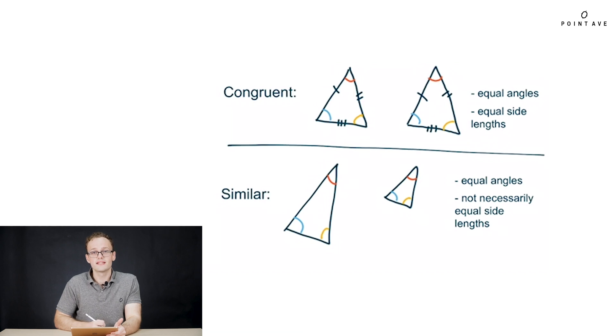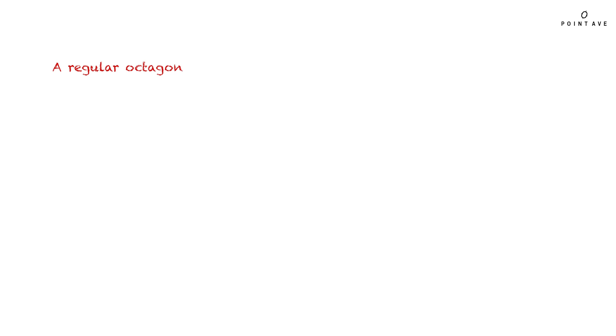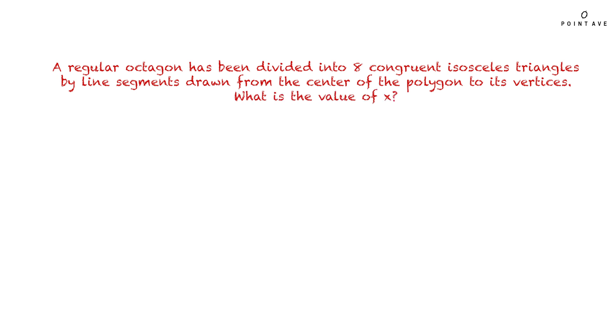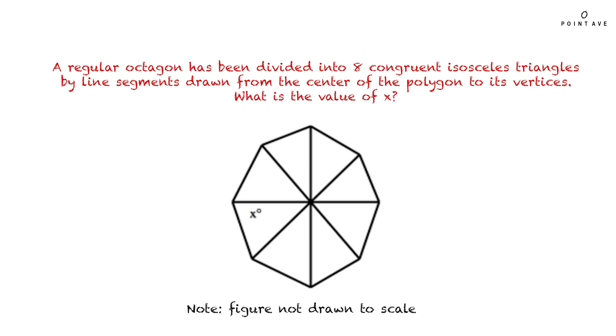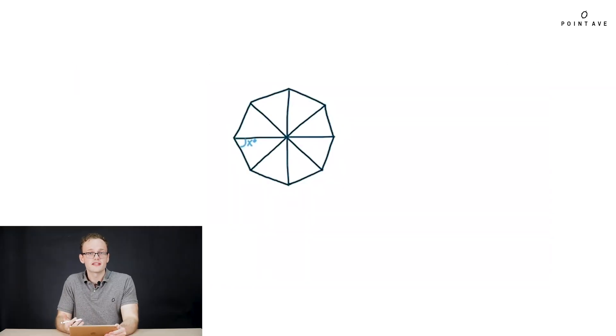Let's see how these definitions will apply to an actual SAT problem. A regular octagon has been divided into eight congruent isosceles triangles by line segments drawn from the center of the polygon to its vertices. What is the value of x? Again, we see a geometry problem where the answer or even a path to the answer is definitely not clear. So again, we want to start with our diagram, fill in whatever we can, and eventually get ourselves to the answer.